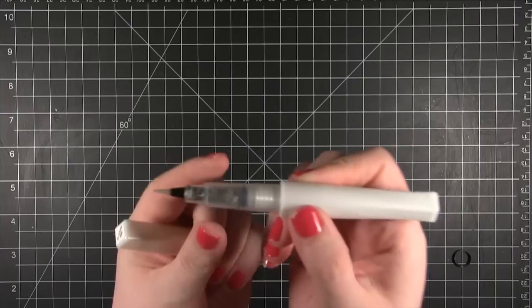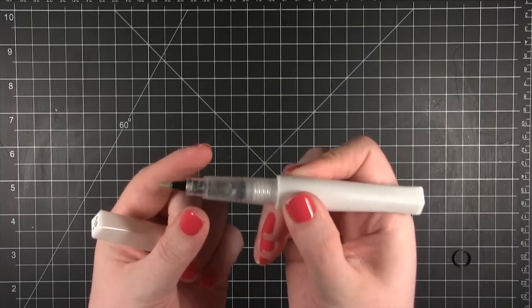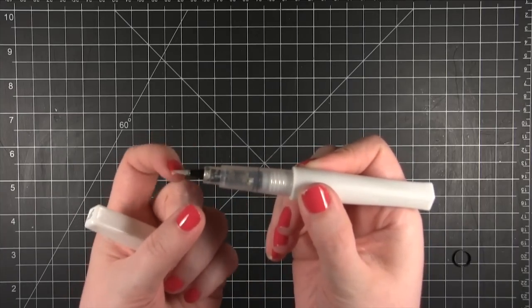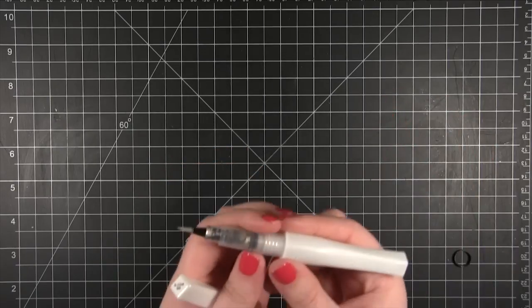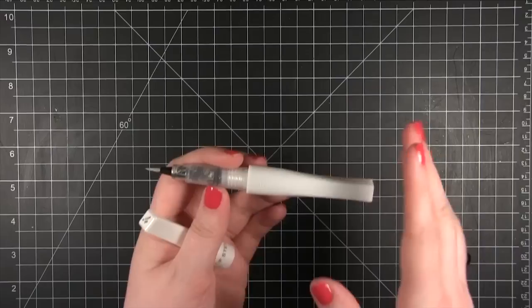You're going to push this just a little bit to kind of pump the glitter ink down into the end of the brush. You're only going to do this the initial time that you use your brush. You're not going to need to do it any time after that really.